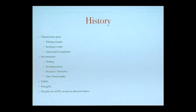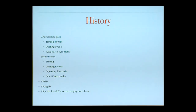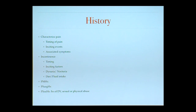When taking a history targeted toward pelvic pain and incontinence, it's important to characterize the pain — whether it's sharp, stabbing, or dull — its onset, any inciting events such as standing for long periods or certain foods, and associated symptoms like constipation or bladder pain. For incontinence, we also consider whether patients have pain associated with incontinence, which can relate to urinary tract infections, urinating at night (nocturia), and diet and fluid intake since certain foods and drinks can be irritative to the bladder. We review medical and surgical history, and for chronic pelvic pain, it's important to ask about history of abuse or domestic violence, since there is an increased incidence associated with chronic pelvic pain.